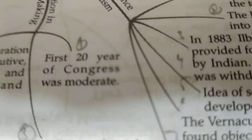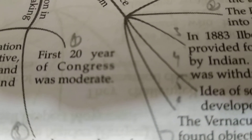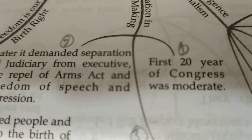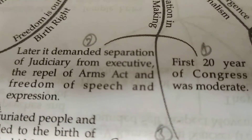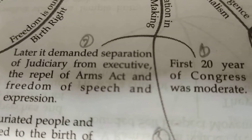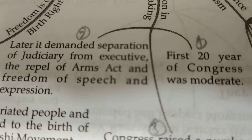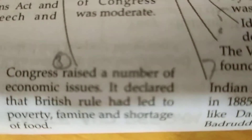Then, the making of the nation. In the first 20 years of the Congress, the Congress was moderate. Later on, they demanded separation of judicial reform, repeal of the Arms Act, and freedom of speech and expression.